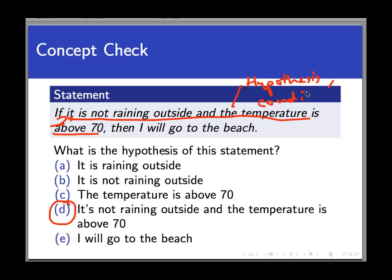We'll have more to say about and statements later on, which is what this hypothesis is. But for now, notice that the hypothesis here has two parts and they are joined by the word and. We still consider this to be a single statement in the hypothesis.